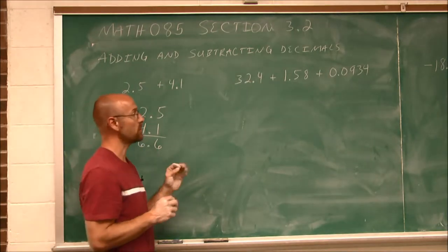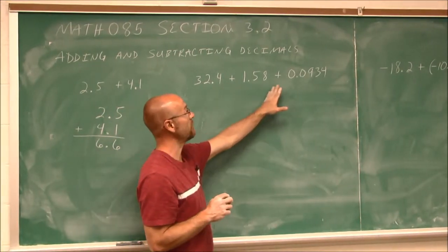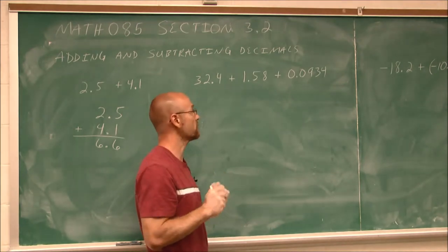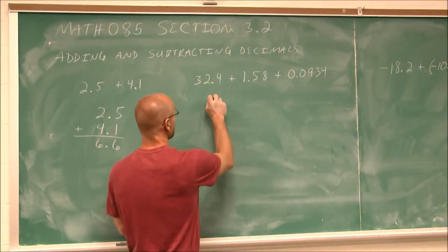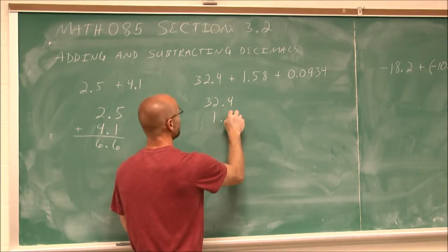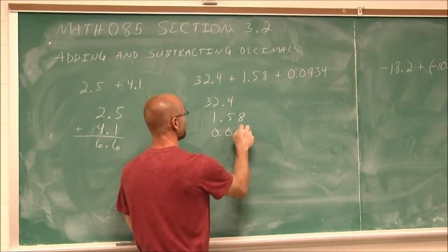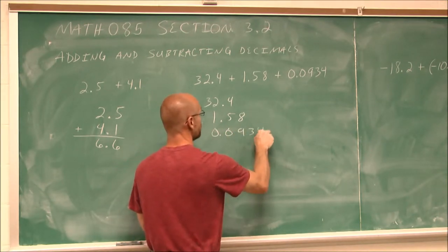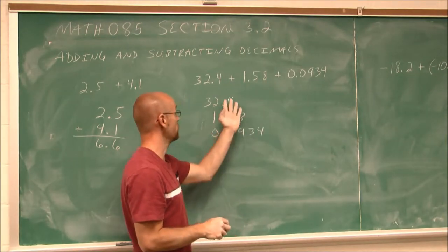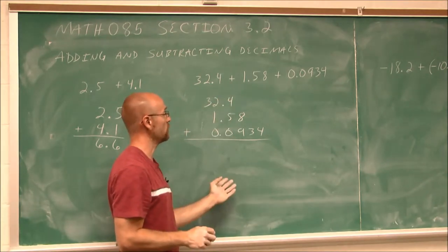In the next example, we'll see something a little bit different. Because when we add and they have different decimal places, sometimes we've got to put in a 0 just as a placeholder. So I'm going to line up my decimals: 32.4, 1.58, 0.0934. Since they're all addition, I'm going to do it all at once in a vertical manner.